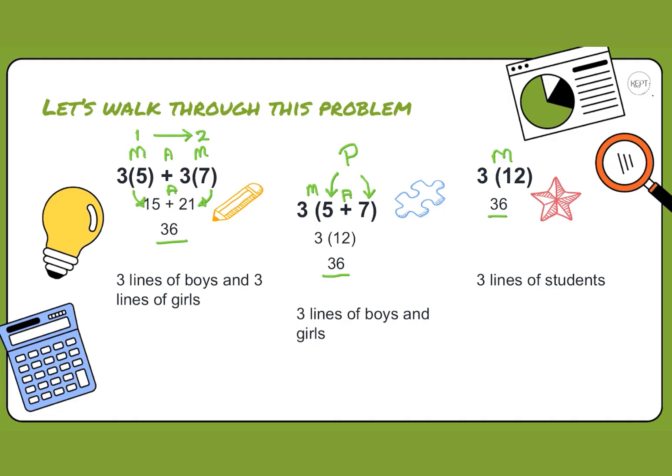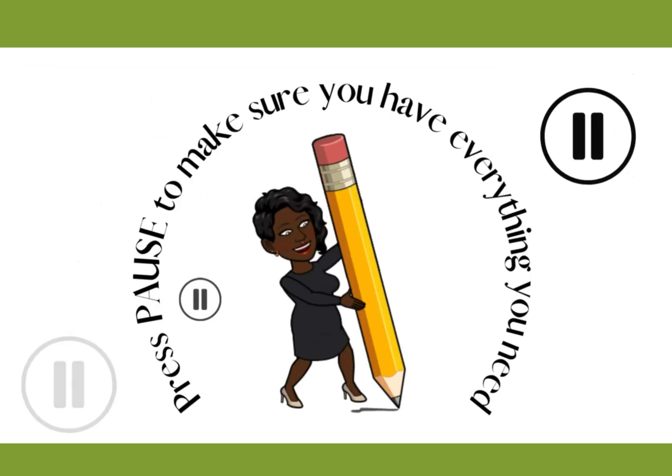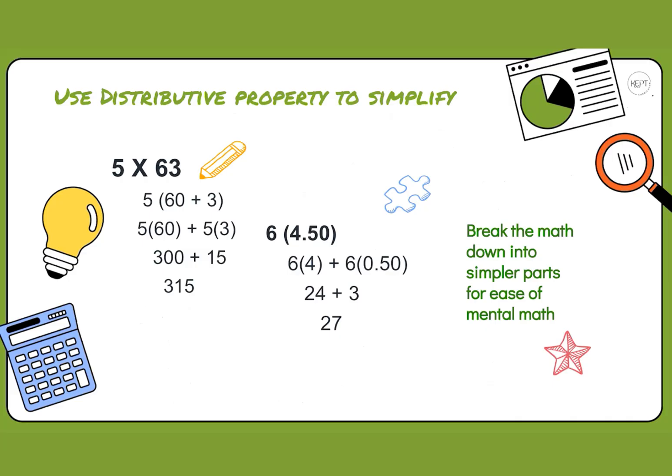Distributive property is simply a way of looking at a problem in a different way. Can we make it easier to understand? Can we break those numbers down? Let's use distributive property to simplify.